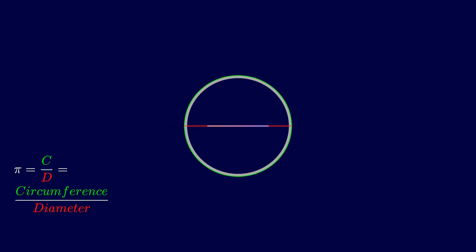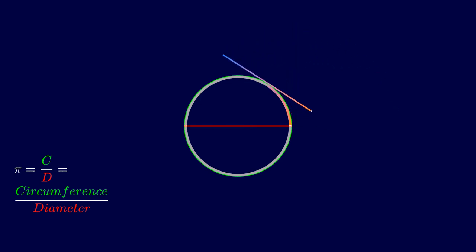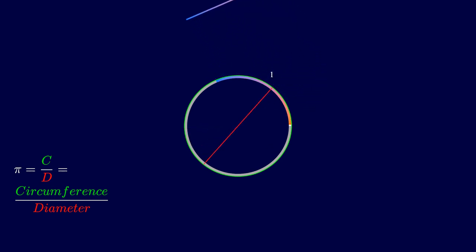To see how this works, let's consider measuring how many diameters it takes to wrap around a circle. By using a diameter-length measuring stick, we can see that the diameter-length rod measures around once,